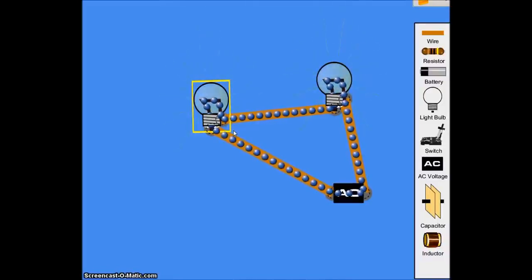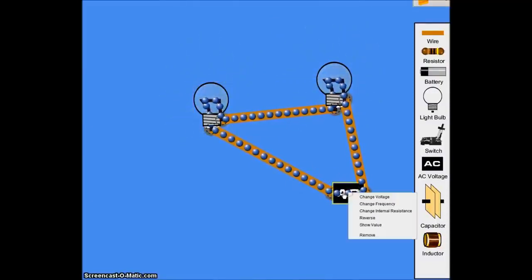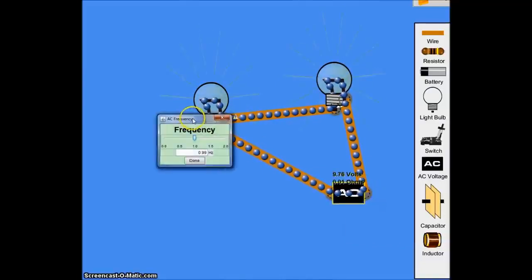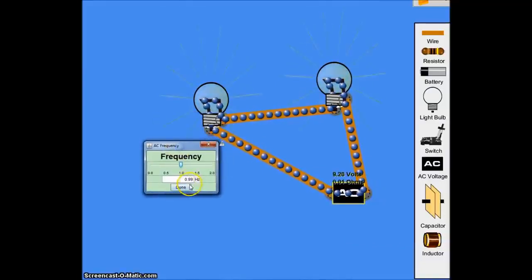So remember, we talked about alternating current is 60 hertz, it changes 60 times per second. This, our little AC battery here, is only going about one time every second, it's changing one time every second. We can bump it up to two times a second, that's the most that the program can hold.